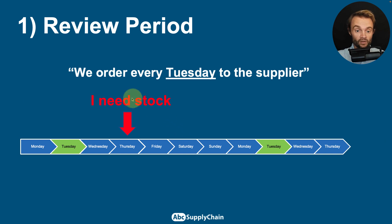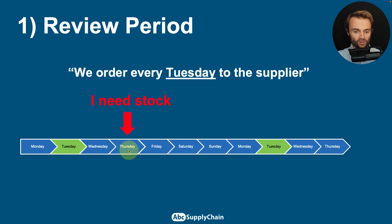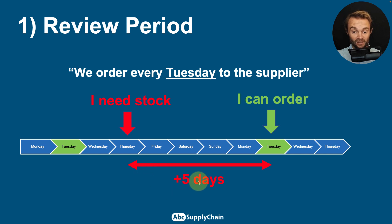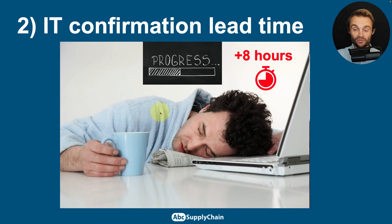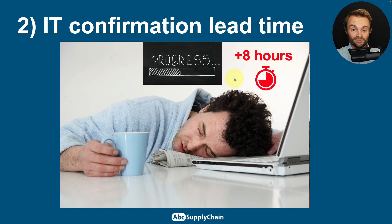First, let's talk about the review period. For example, if you can only order once a week, every Tuesday, and you need stock on Thursday, you have to wait until Tuesday — that's potentially five days of waiting before passing the order. This review period, which can range from one to seven days, should definitely be included in your total lead time. There is also the IT confirmation lead time: in some companies, just processing an order takes four to six hours, which you should also consider.